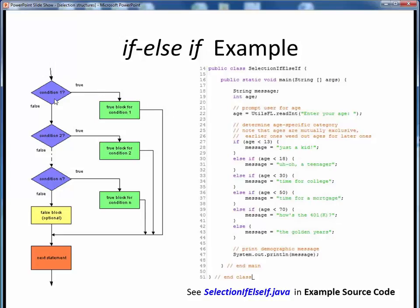Otherwise, if the first condition is false, we move on to the second condition and check it. In this case, whether the age is less than 18, and if true, we define a teenager-specific message. And so on, and so on. In all cases, we execute only the first true block whose associated condition is true. If we find that none of the conditions are satisfied, in that case we execute the contents of this optional false block, or in the code, this else block.